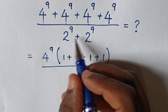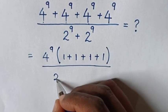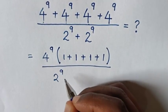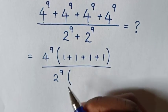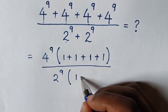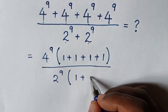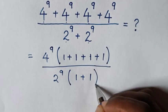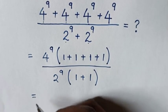Here in the denominator, 2 power 9 is common. So take 2 power 9 out of the bracket. Each term divided gives 1 plus 1. Bracket. Then it will be equal to: